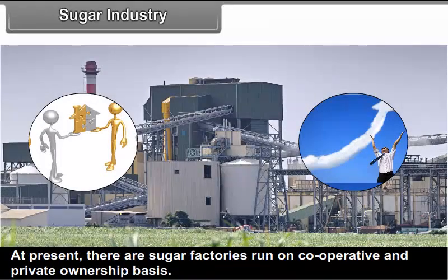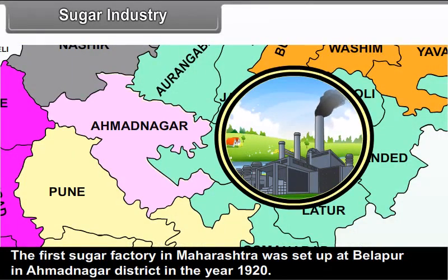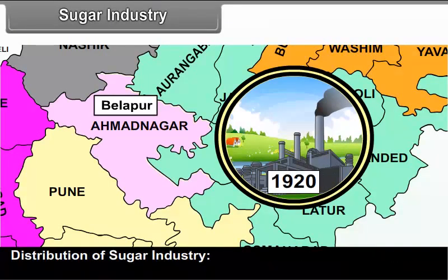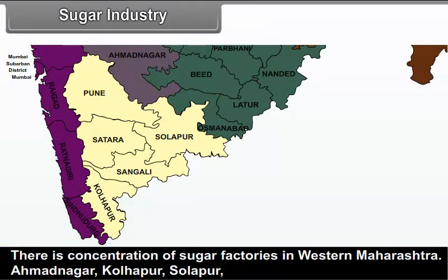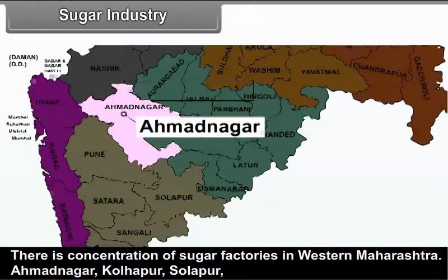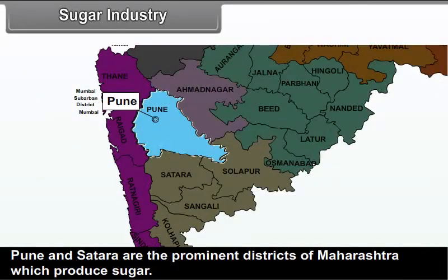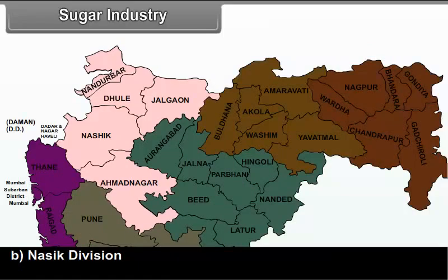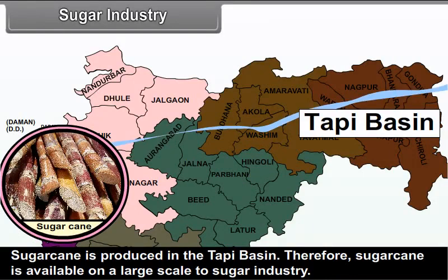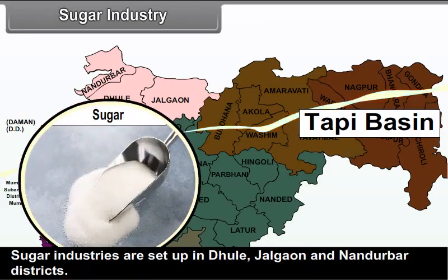At present, there are sugar factories run on cooperative and private ownership basis. The first sugar factory in Maharashtra was set up at Belapur in Ahmednagar district in the year 1920. Distribution: In Pune division, there is a concentration of sugar factories in Western Maharashtra — Ahmednagar, Kolhapur, Solapur, Pune and Satara are the prominent districts. In Nasik division, sugarcane is produced in the Tapi basin, so sugar industries are set up in Dhule, Jalgaon and Nandurbar districts.